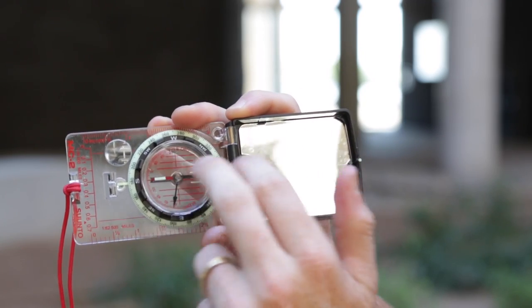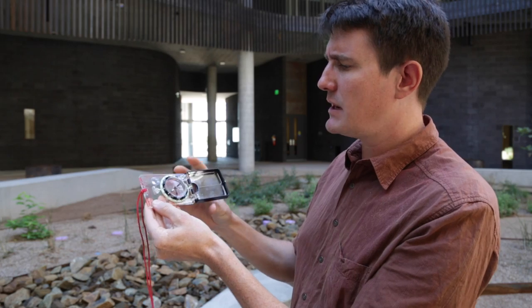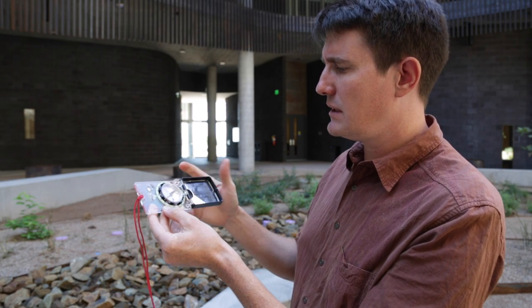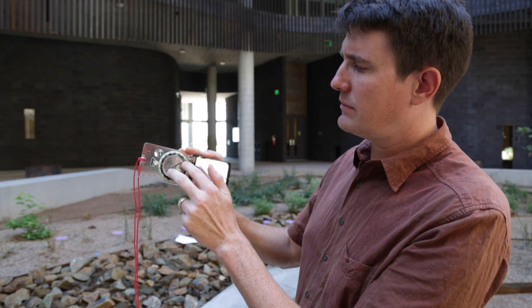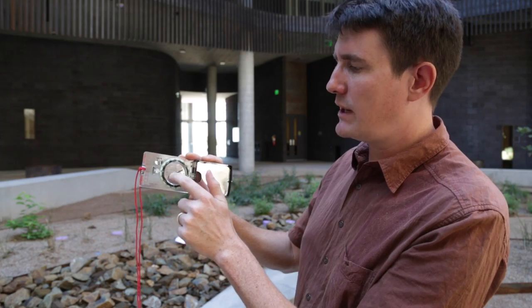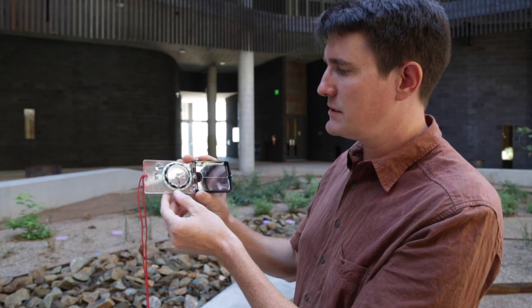And then also there's all sorts of markings on the back which are not critically important for this. In the middle here we have the magnetic compass, red, always points to north, it can't help but do that.